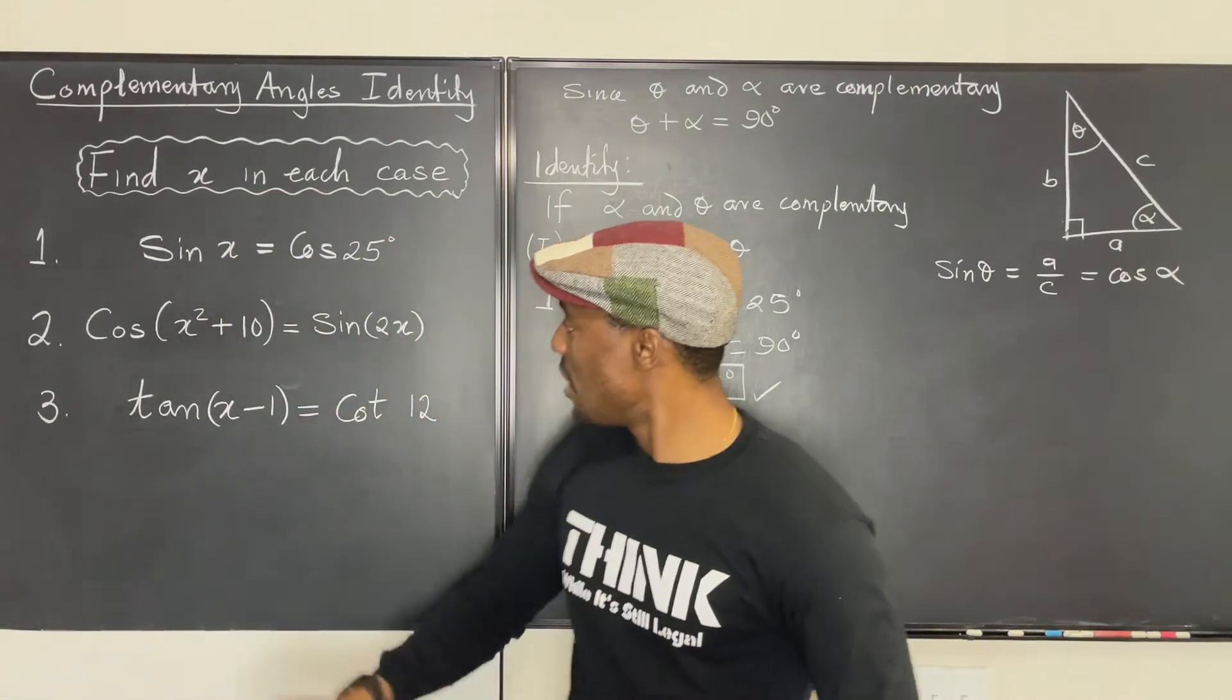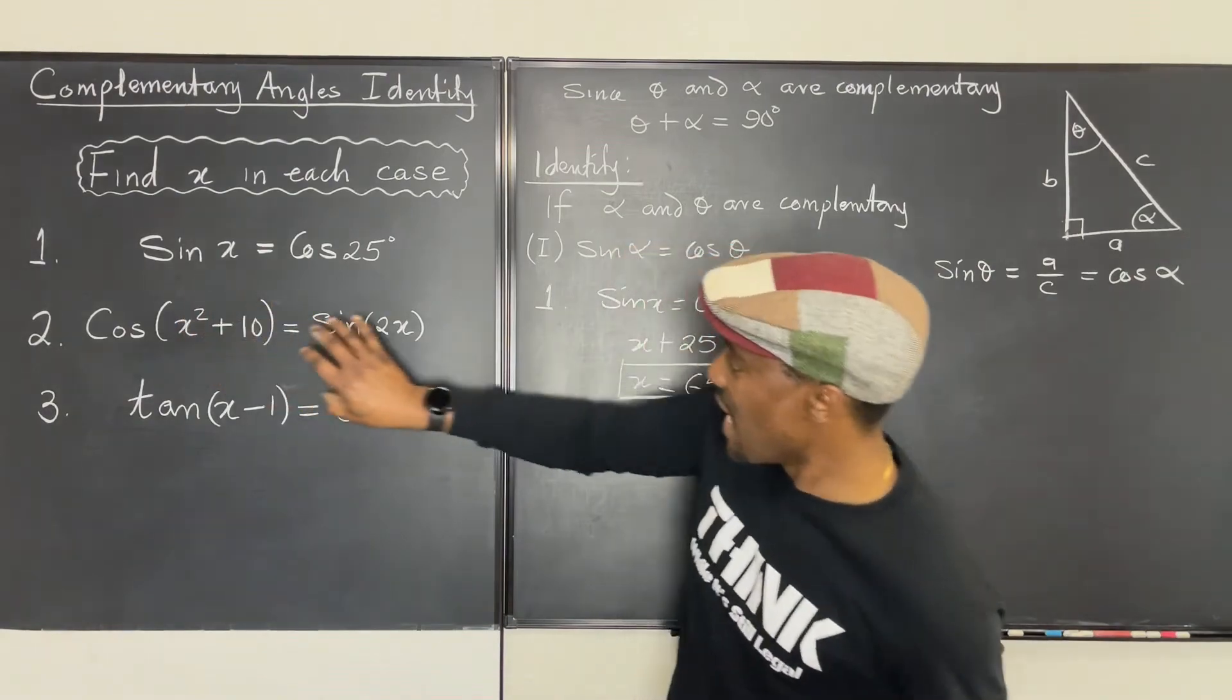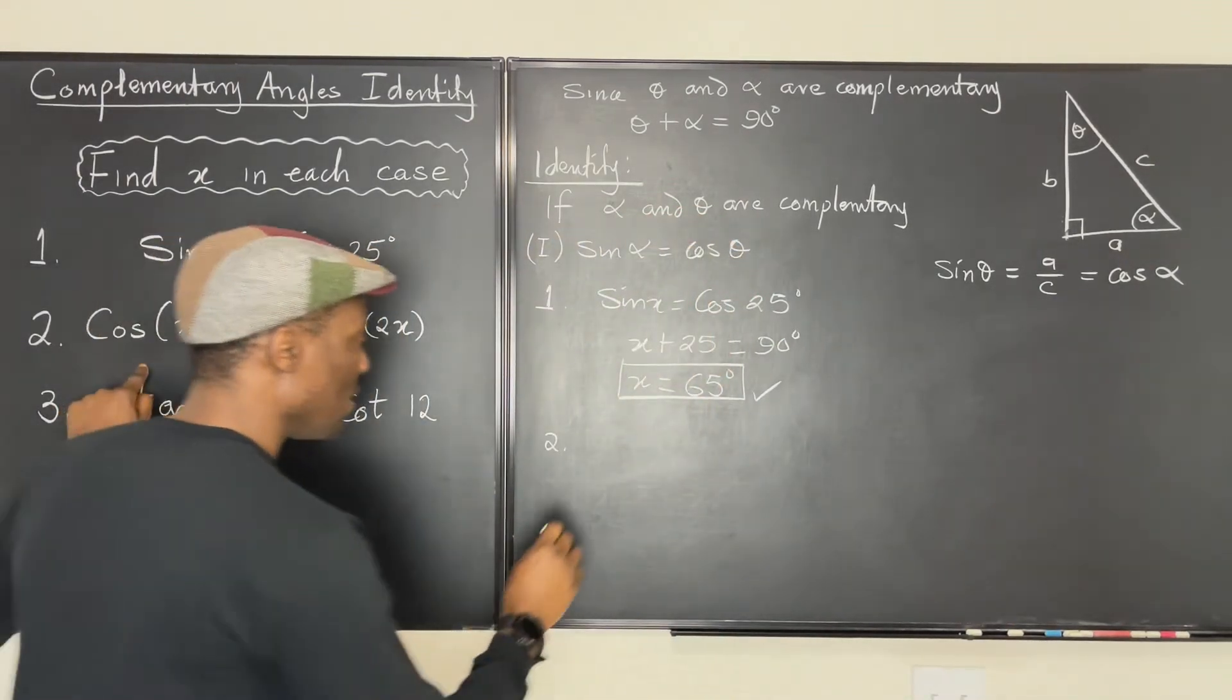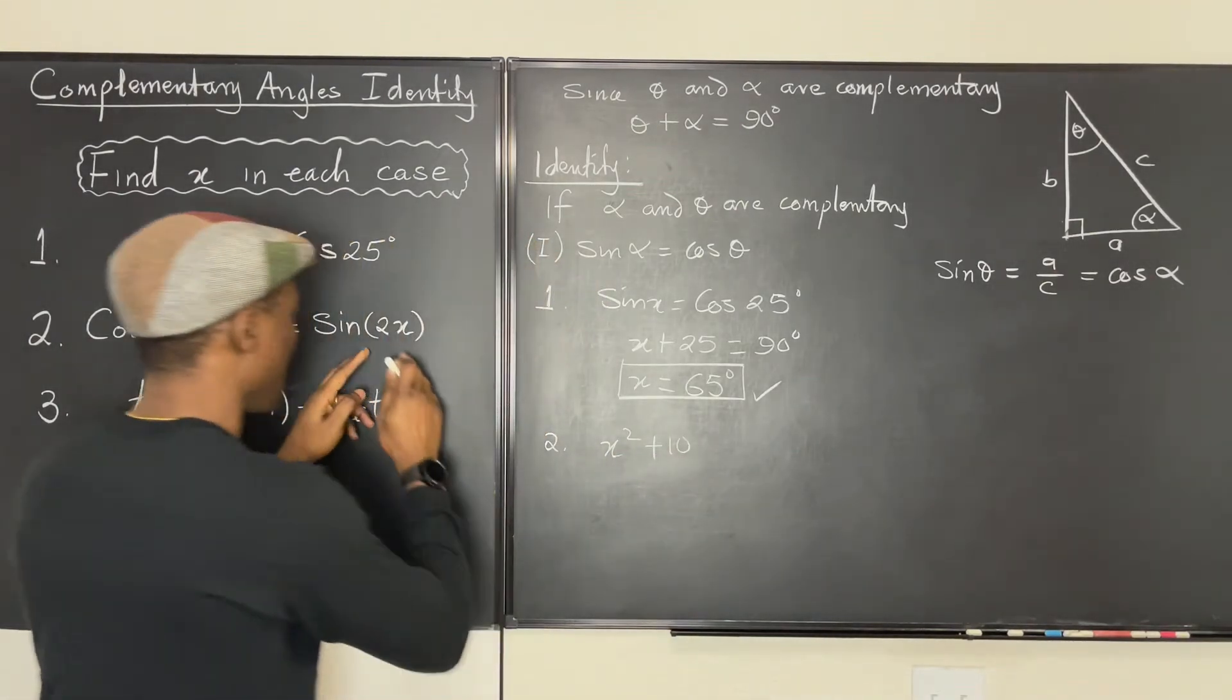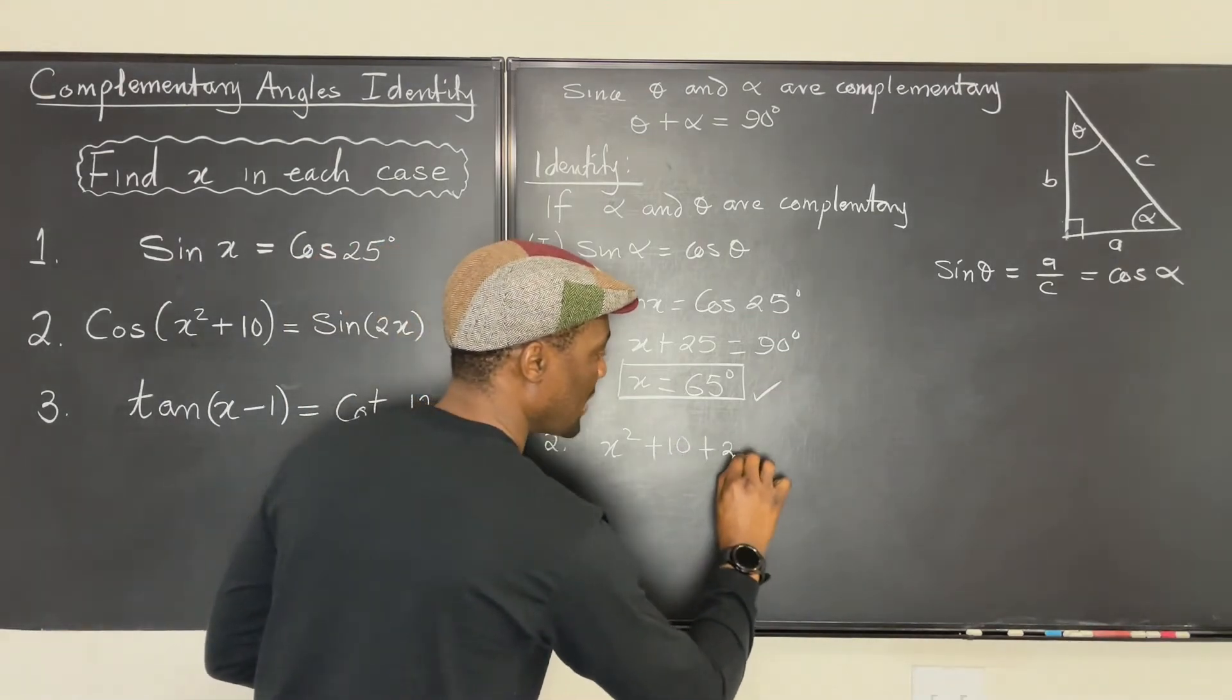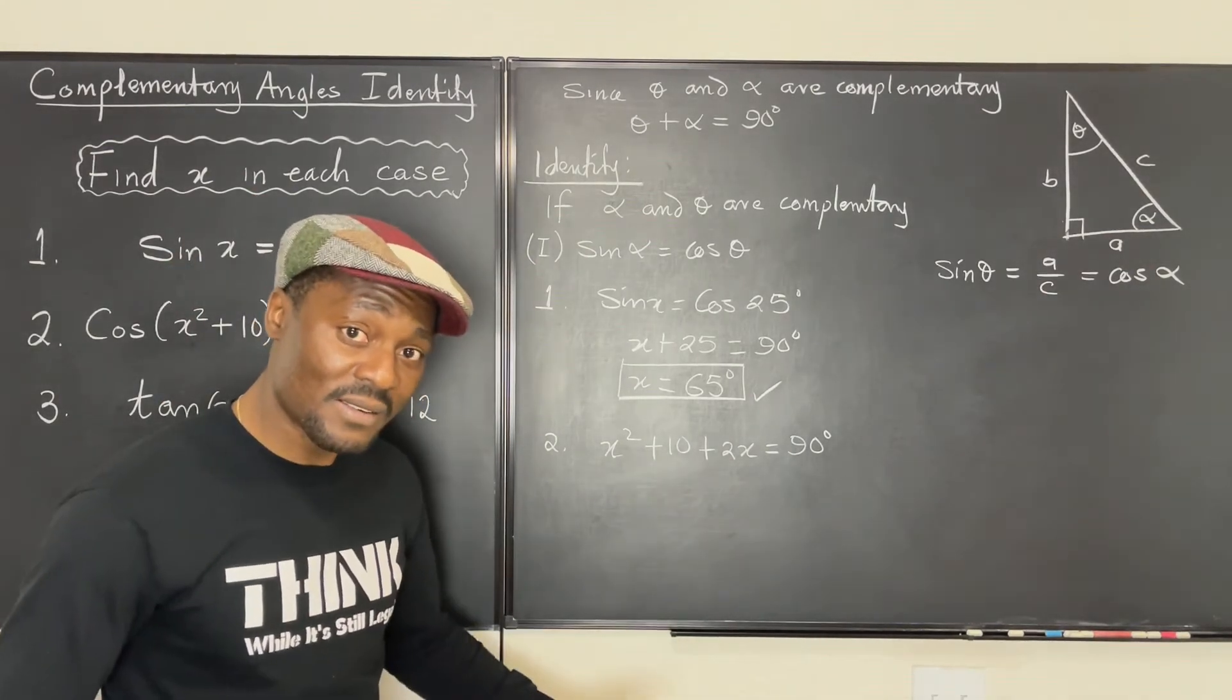And the same thing applies to number two. You see, it is cosine being equal to sine. Well, that never happens unless this and this are complementary. That is, when you add them together, you'll get 90 degrees. So we're going to apply that to number two also. So for number two, we're going to say that x squared plus 10 added to 2x gives us 90 degrees. Well, we just need to make a quadratic equation out of this, solve it, and get our answer.